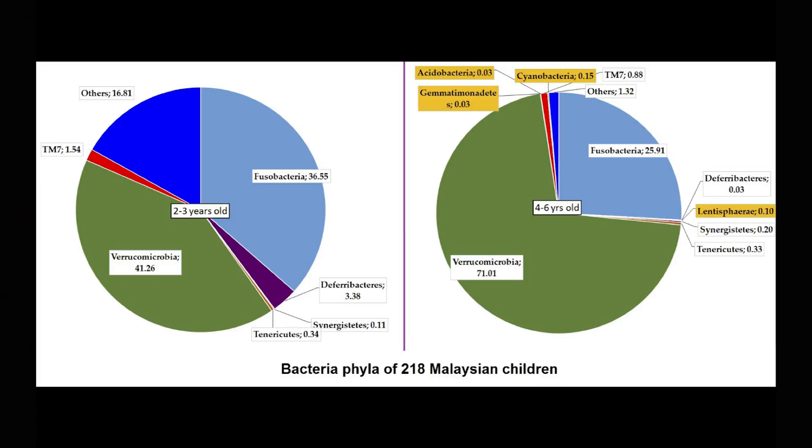If we look at the color changes — looking at those from two to three years old and those from four to six years old — the color is already changing. Our children, when they are young, once they hit preschool days, already have a microbiota composition almost similar to adults.